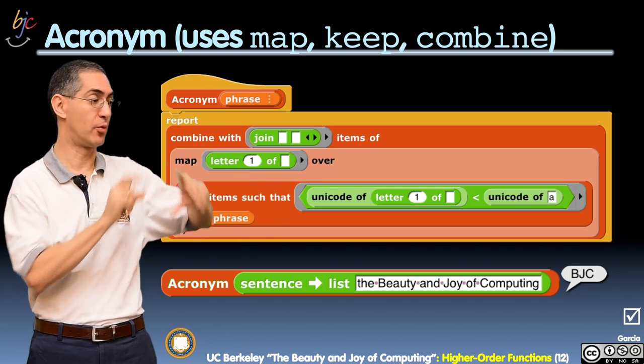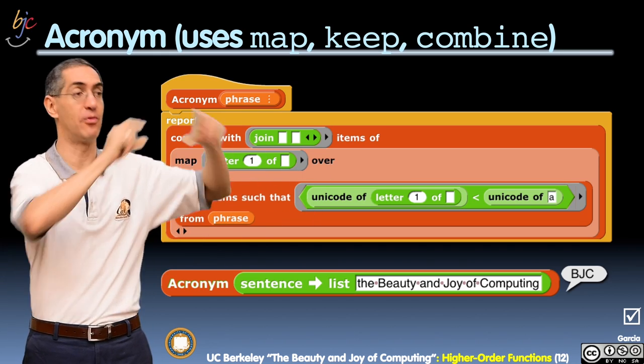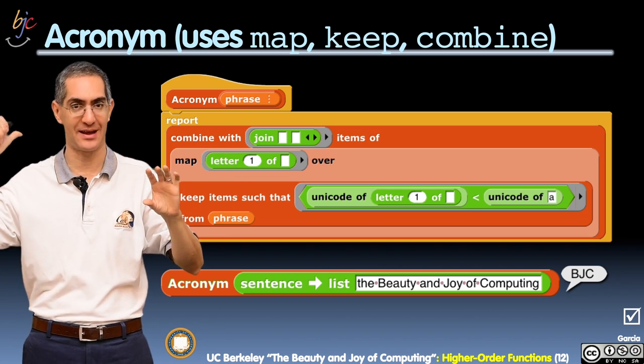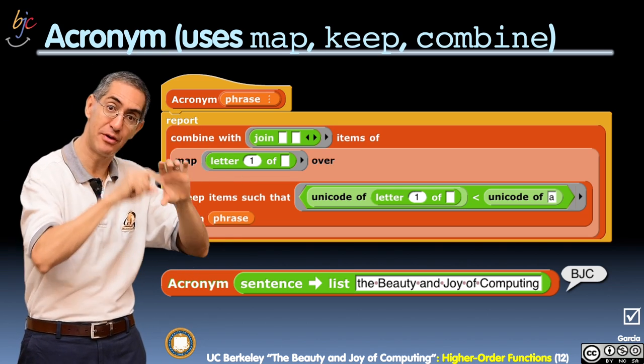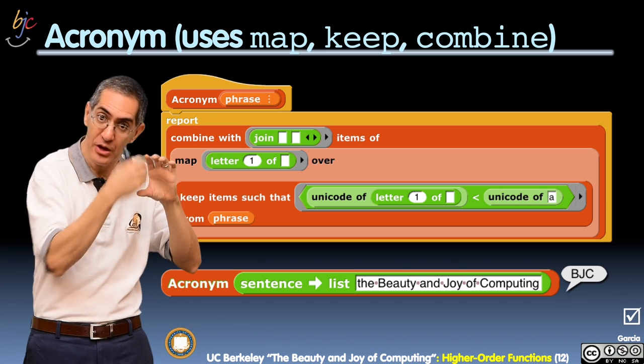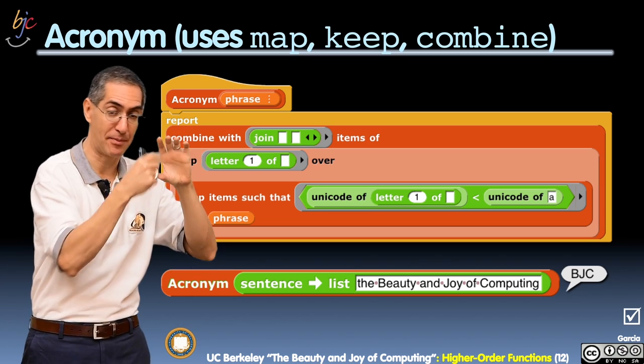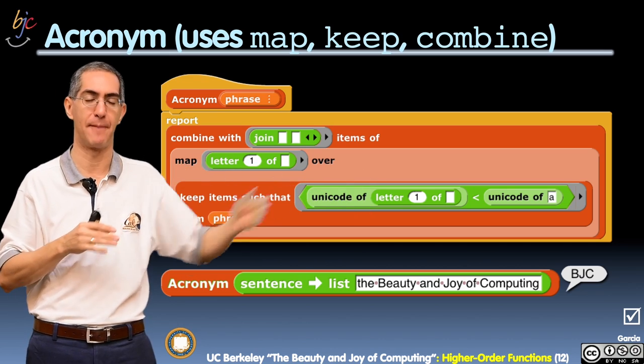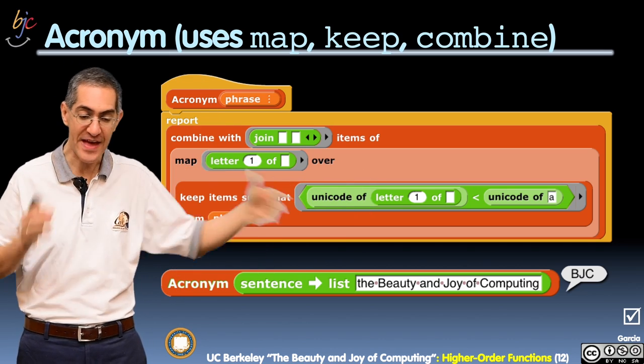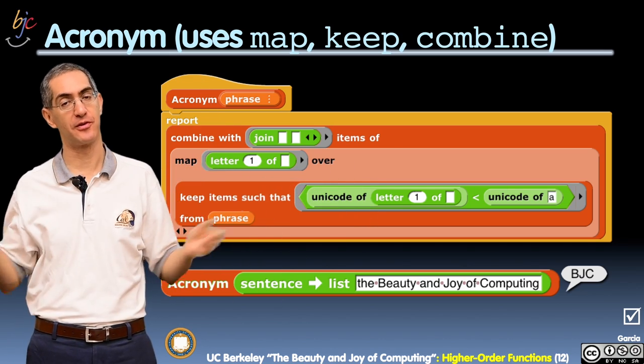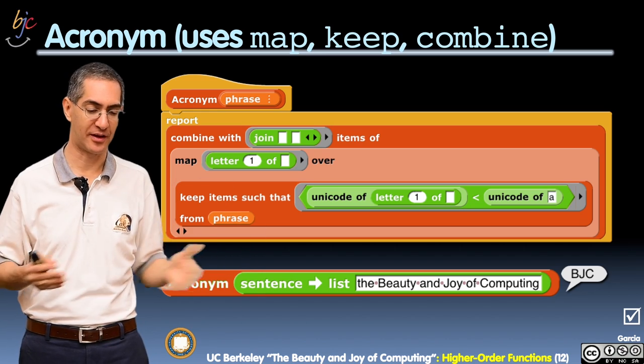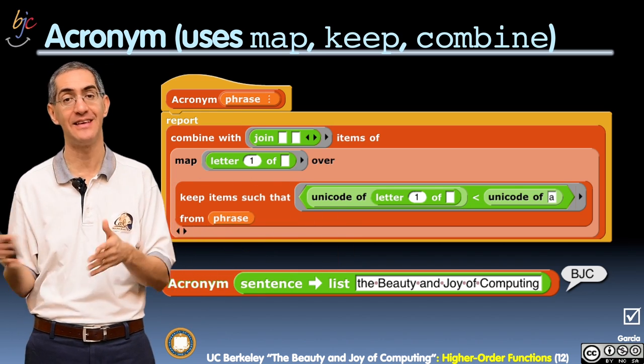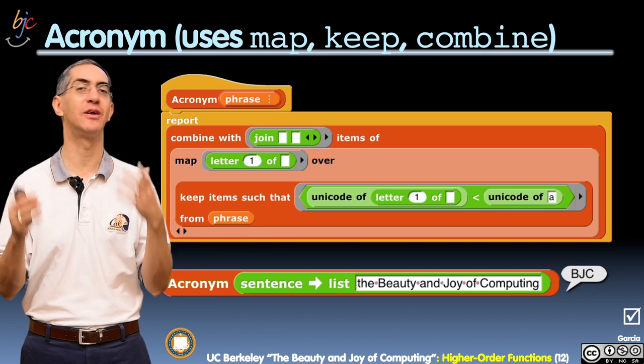The first one, 'the', is lowercase, so it looks at the first letter 't', doesn't pass the test, so 'the' is not kept. The next one is Beauty. Beauty is capital B. The unicode of B capital is smaller than small 'a', and so it keeps that whole word Beauty, it keeps each letter there. Okay, so that gets passed to the map which strips the first letter out. That gets passed to the combine which then joins them together. This is how you call it: acronym of sentence to list 'the Beauty and Joy of Computing', and you get BJC. So that was one of the solutions to the lab exercise.